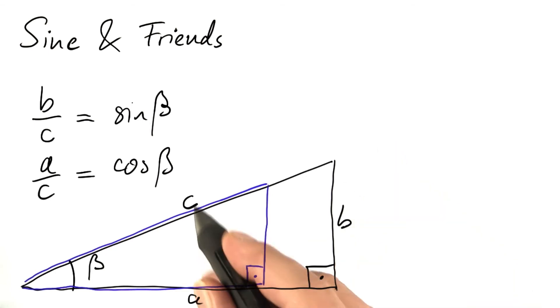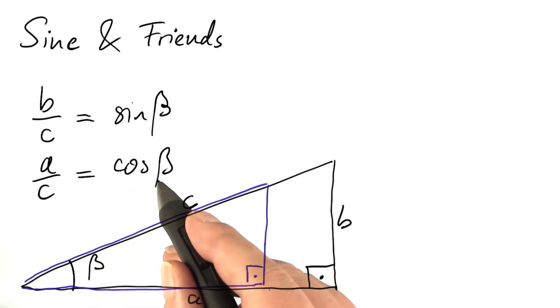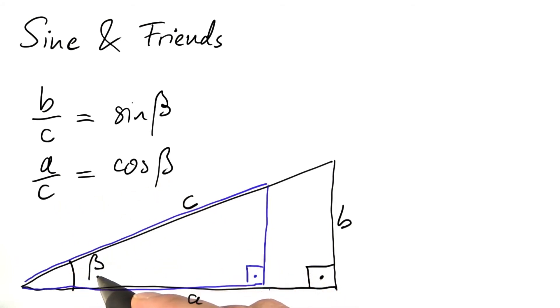Same for A divided by C. A shrinks, C shrinks in the same ratio. This ratio, A divided by C, stays constant. It's a function of this angle beta alone.